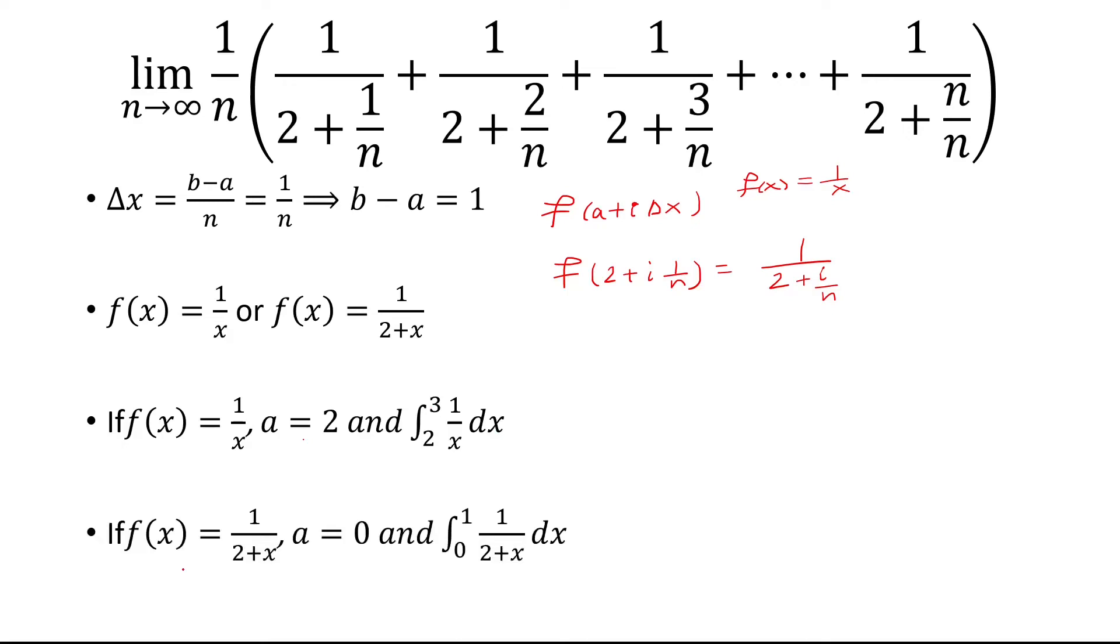Now, if f of x is 1 over 2 plus x, the 2 is already being taken care of. So really, we're going to plug in just i over n, or delta x, because a is 0. And so you still end up getting the same thing. So if a is 0, b has to equal 1. And so we have the integral from 0 to 1, 1 over 2 plus x dx.